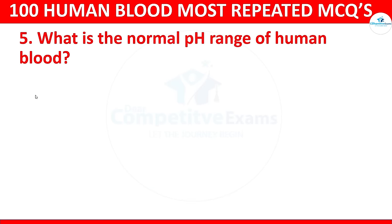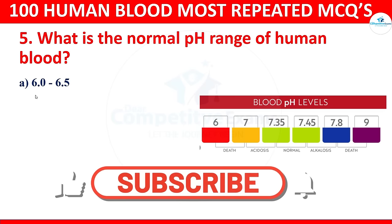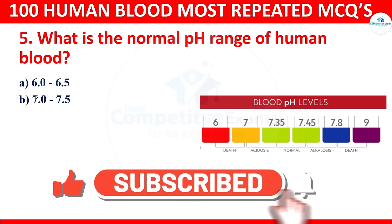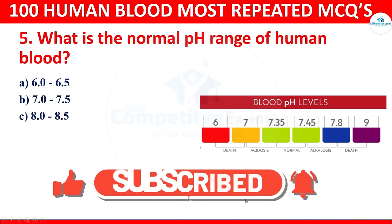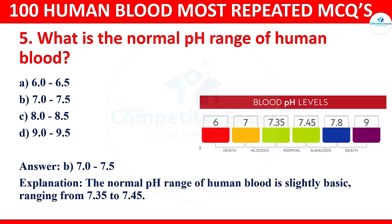Question 5: What is the normal pH range of human blood? The options are 6.0–6.5, 7.0–7.5, 8.0–8.5, or 9.0–9.5. The correct answer is 7.0–7.5. More precisely, the normal pH range of human blood is slightly basic, ranging from 7.35 to 7.45.